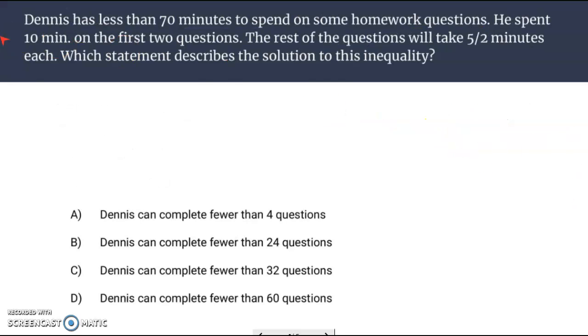Another multiple choice one. Dennis has less than 70 minutes to spend on some homework questions. Let's go about setting up our inequality as we read this. Less than 70 minutes. So far he's spent 10 minutes. And the rest of the questions will take five halves minutes, or two and a half minutes each.